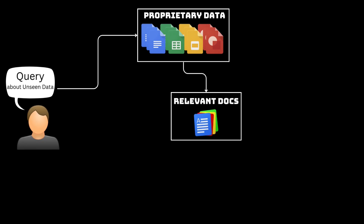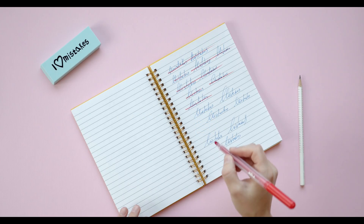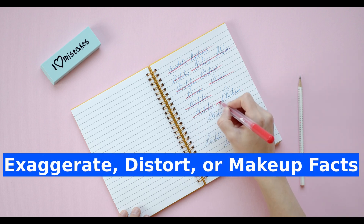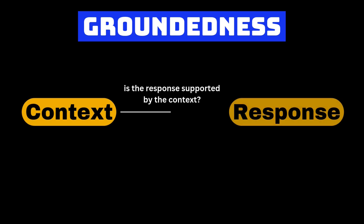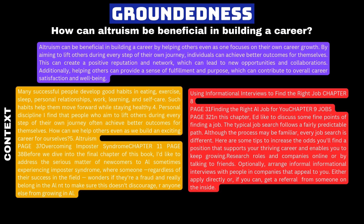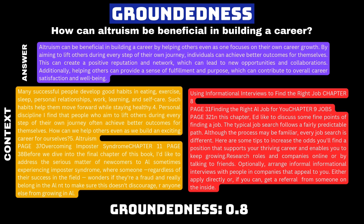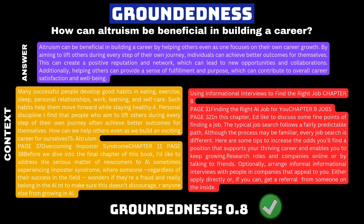Once we have retrieved relevant context, the LLM produces the answer. LLMs do have a tendency to exaggerate, distort, or make up facts that sound correct but are not. As part of groundedness evaluation, we measure the extent to which the claims made by the LLM can be attributed back to the retrieved context. We assign a score between 0 and 1 to the response based on its groundedness in the retrieved context — a high score means the response is highly grounded in the context.